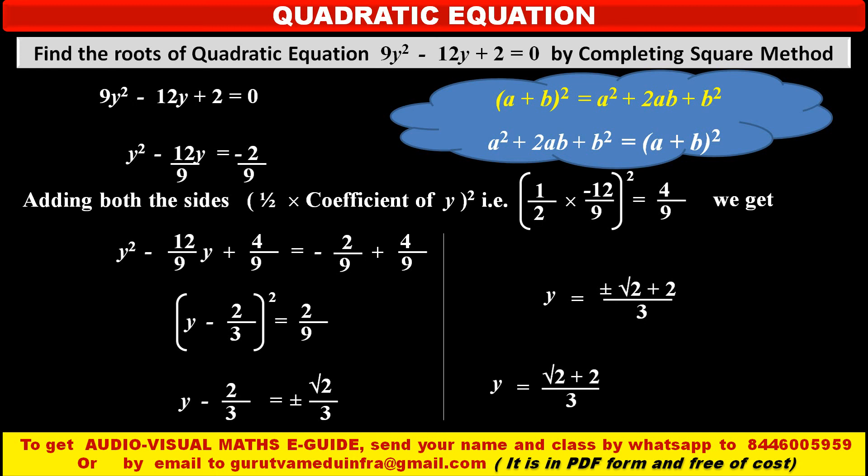Because of ±√2 we get two values of variable y: one is y = (√2 + 2)/3 and second value is y = (-√2 + 2)/3.